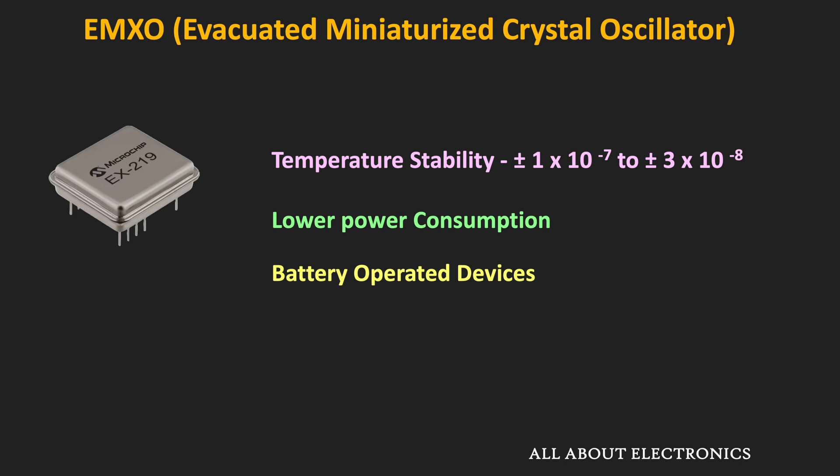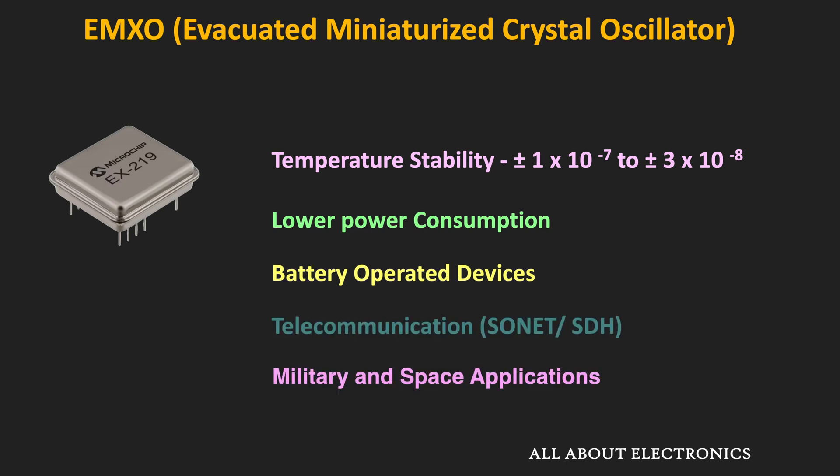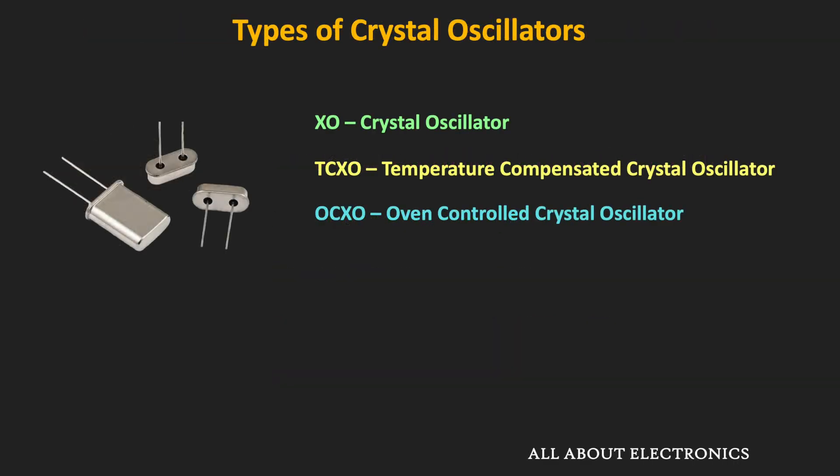The EMXO provides temperature stability between the TCXO and the OCXO, consumes less power, and is suitable for battery-operated devices. They are mainly used in telecommunication applications. So far, we have seen three main types of crystal oscillators: the normal crystal oscillator, the temperature-compensated crystal oscillator, and the oven-controlled crystal oscillator.